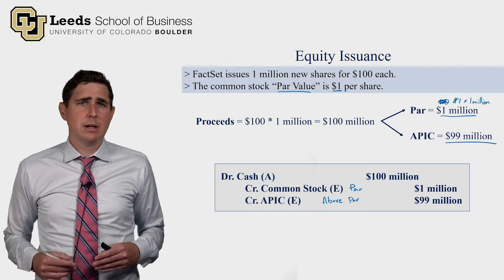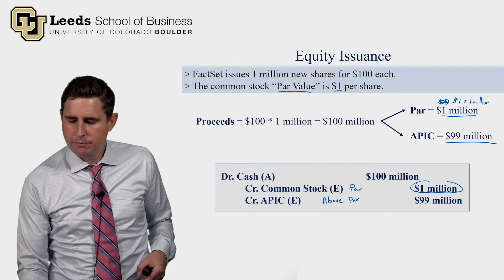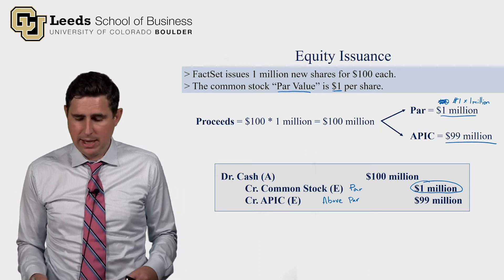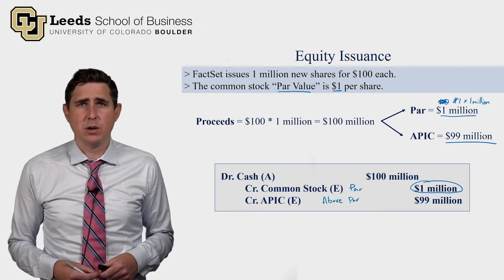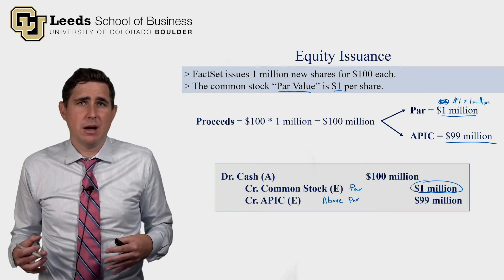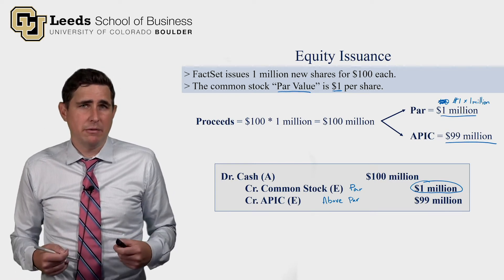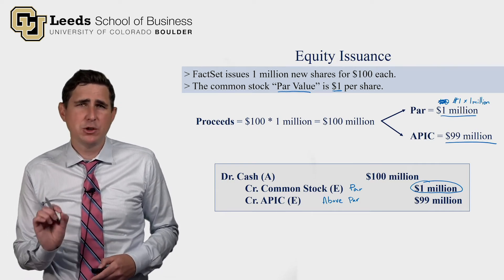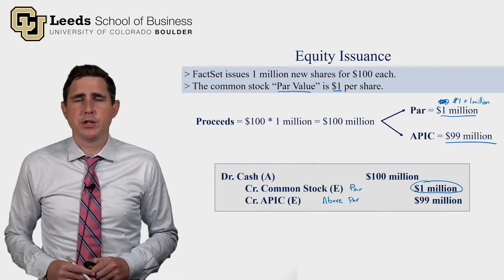Whenever you see the common stock account on a company's balance sheet, the balance reflects the number of shares issued times the par value. In FactSet's case, the common stock account would show $1 million, so you'd know FactSet's par value is $1 and there are 1 million shares issued. That's it for equity issuance; now let's move on to treasury stock.